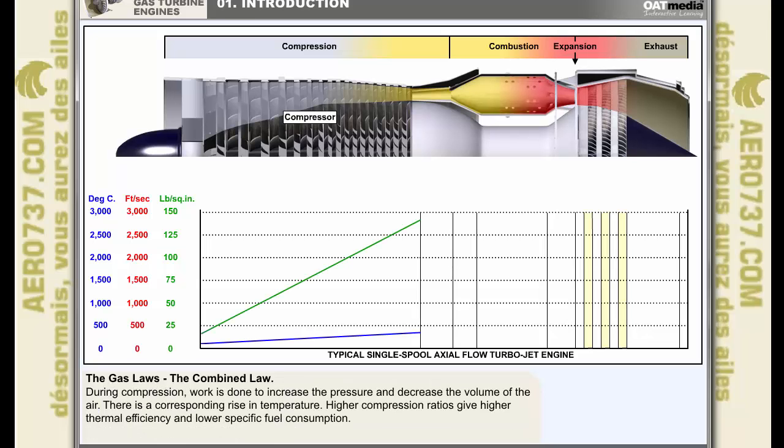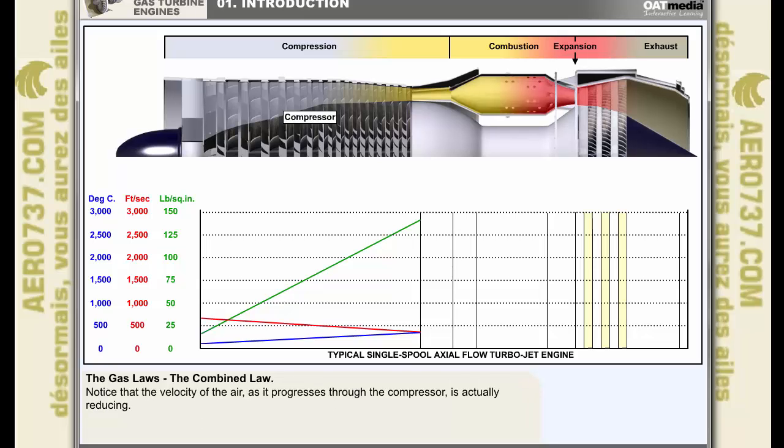During compression, work is done to increase the pressure and decrease the volume of the air. There is a corresponding rise in its temperature. Just as they do in the piston engine, higher compression ratios give higher thermal efficiency and lower specific fuel consumption. Notice that the velocity of the air as it progresses through the compressor is actually reducing. This is required so that when it gets to the combustion chambers, its speed is not such that it will extinguish the flame.